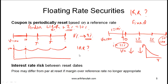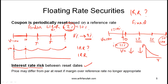So is there any interest rate risk? Yes — there is some interest rate risk between reset dates, but the interest rate risk for a floating rate security is clearly less than for a regular fixed coupon rate security. Note also that if the credit worthiness of the issuer goes down, the spread will go up, and in that case the price of the bond may be less than par value at reset dates.